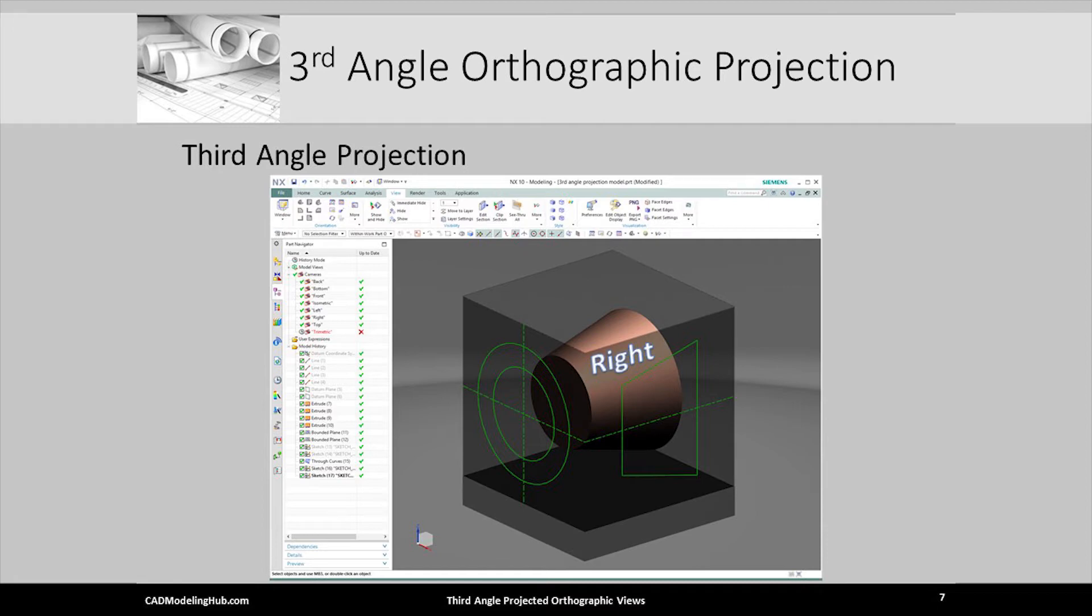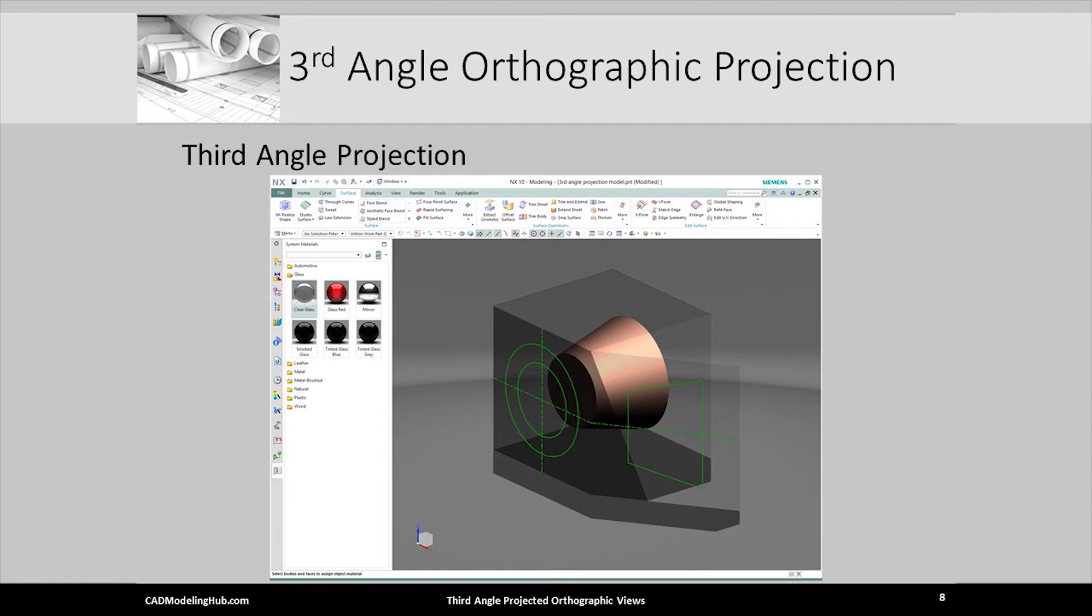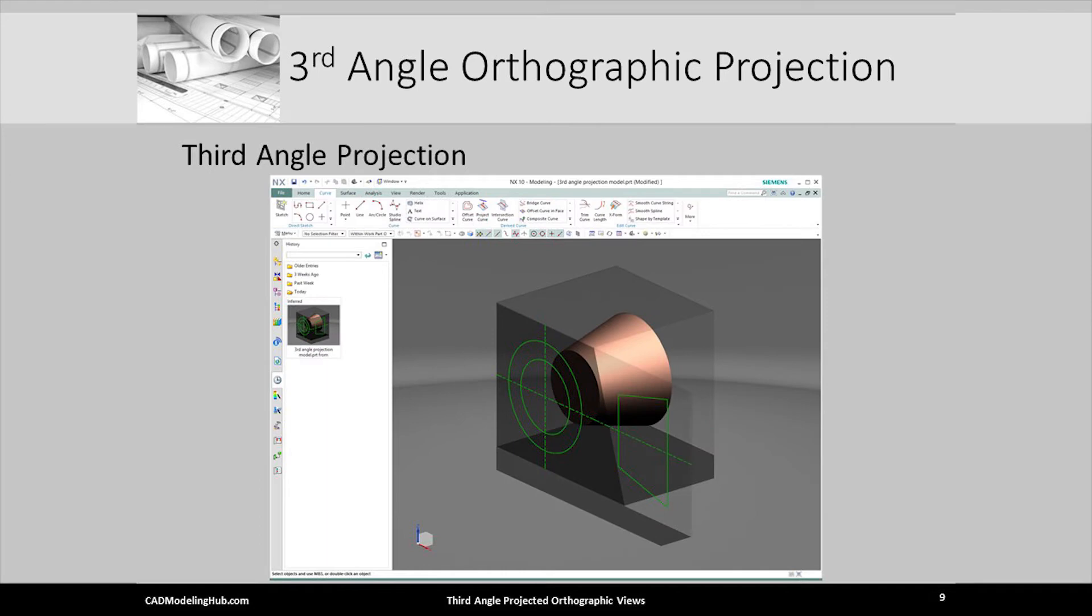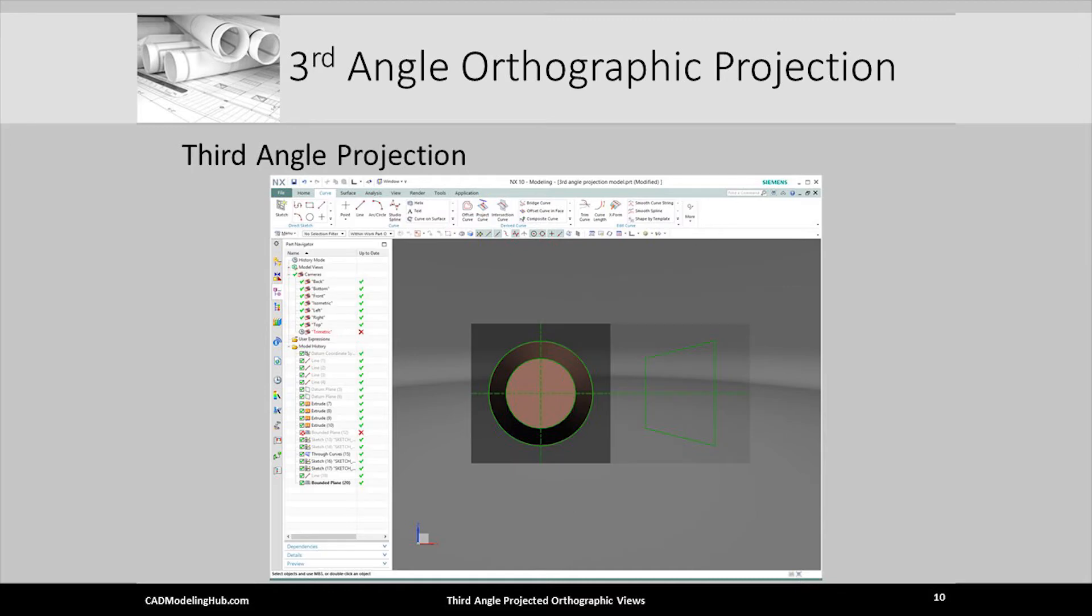This is the right side plane onto which I have projected or brought forward the silhouette and planar faces or edges of the cone. This shows a partial rotation of the right side plane, and this shows the right side view of the cone fully rotated into the plane of the front view.